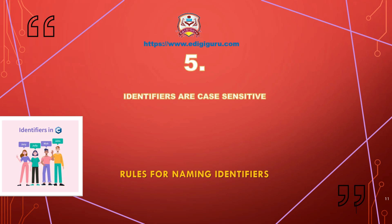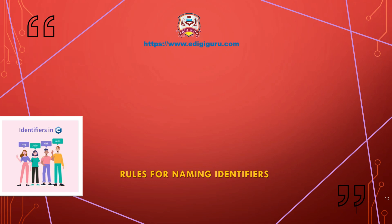The next rule says that identifiers are case sensitive. For example, 'myVar' with a capital V and 'myvar' with a lowercase v are considered two different identifiers. Additionally, there is a length limitation: the length of an identifier name should not exceed 31 characters.